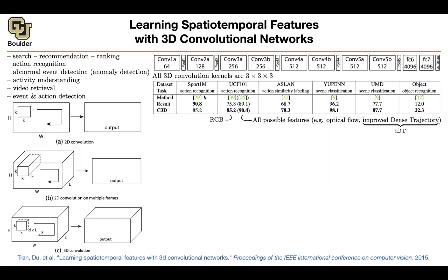Now let's look at some results. Each column is a different dataset — we know Sports-1M and UCF, and there are some others including one from UPenn. Each row is a different method, with competitive state-of-the-art results at that time. C3D (3D Convolutional) is this paper. It lags behind on Sports-1M, probably because it has fewer parameters compared to 2D convolutions, and Sports-1M is a huge dataset — more parameters plus a bigger dataset likely gives better results there. But for the smaller datasets, C3D gives pretty good results.